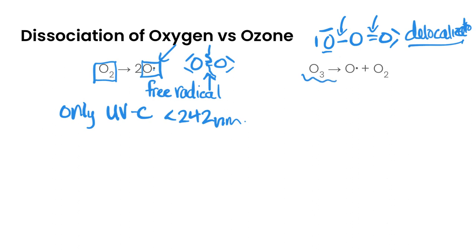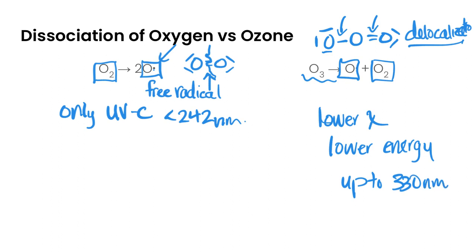So in order to dissociate ozone, breaking it down into an oxygen free radical and an oxygen molecule, it's actually going to take less energy because those bonds, those delocalized bonds that are between a single and a double bond length, are a little bit weaker than a double bond. So it requires less energy to dissociate this. So that means ozone is going to dissociate with lower wavelengths and lower energy. And if we look at where that dissociates, anything up to about 330 nanometers is going to be enough energy to break that bond. So significantly different from oxygen.